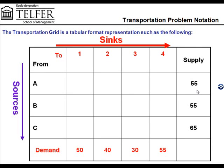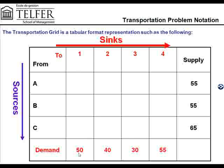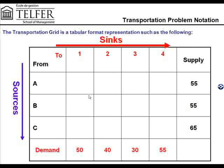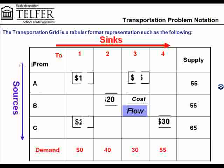We're talking about denominations, thousands of units. Supply point B can supply 55, and supply point C can supply 65. At the bottom of every column, you have the demand for that particular demand point. Demand point 1 has a demand of 50, demand point 2 has a demand of 40, demand point 3 has a demand of 30, and demand point 4 has a demand of 55. The cells in the table show you the flow as well as the cost of transportation between those points, with the cost shown in a smaller cell.